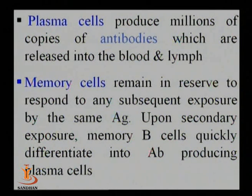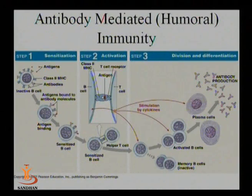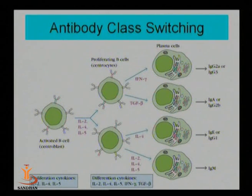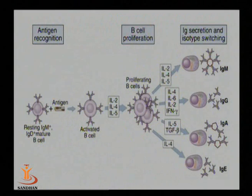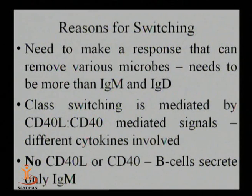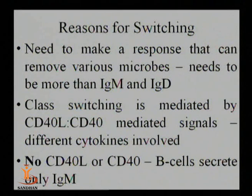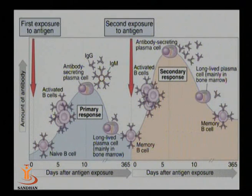From proliferated B cells, the majority become effector B cells converting into plasma cells, while a minor portion becomes memory cells serving as a storehouse. If the same antigen is encountered again, memory B cells activate and become effector B cells again. After antibody synthesis, a primary level of IgM class antibody is synthesized, but this is sometimes insufficient. In that case, antibody class switching occurs, producing IgG and IgD classes.